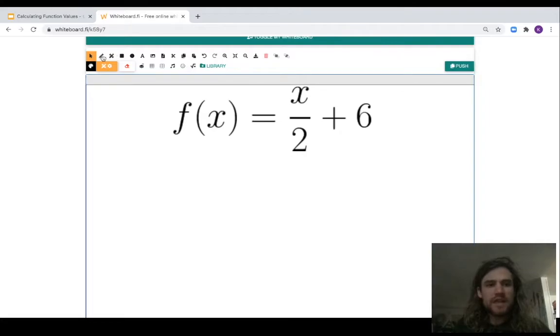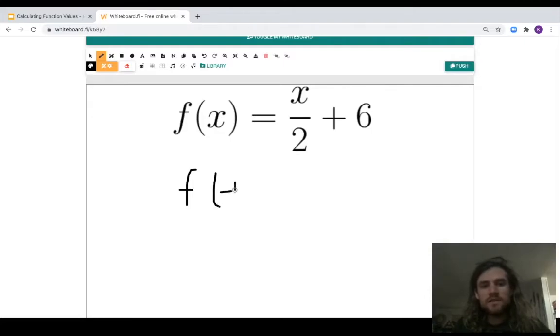Here we go. We're gonna have f of negative four equals - okay, and then the negative four also goes in here for this x - negative four divided by two plus six. Let's do our division first: negative four divided by two, that becomes negative two.